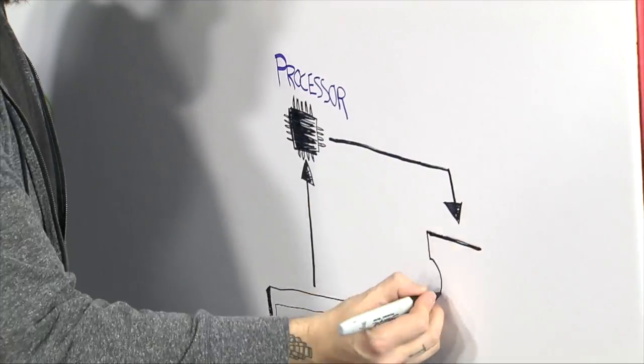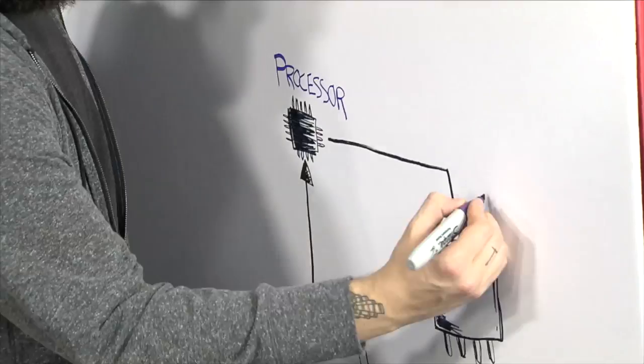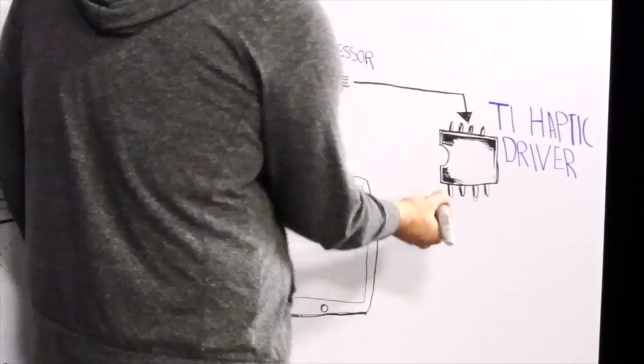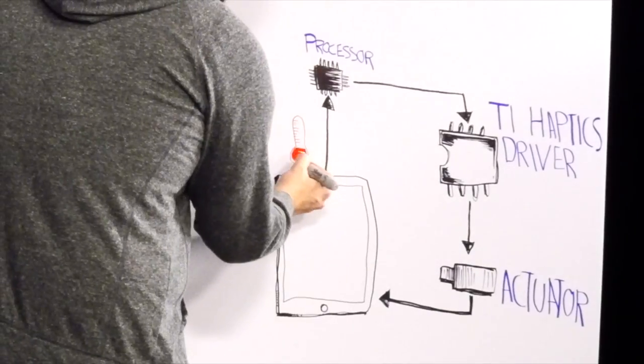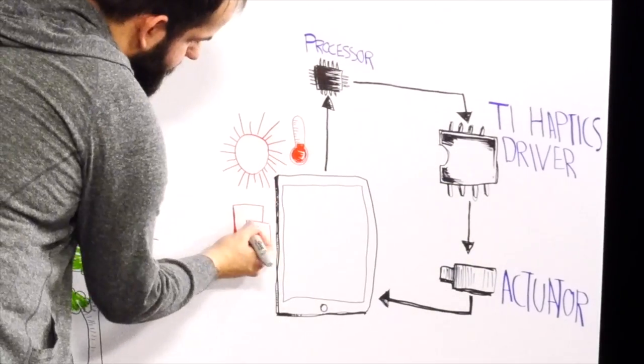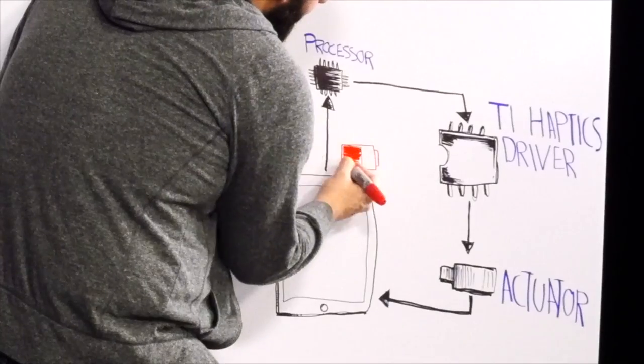The haptics ecosystem contains three parts, an actuator or a motor, a haptics driver IC, and an input stimulus or trigger, which senses information like touch, pressure, light, battery level, heart rate, or a combination of all these inputs.